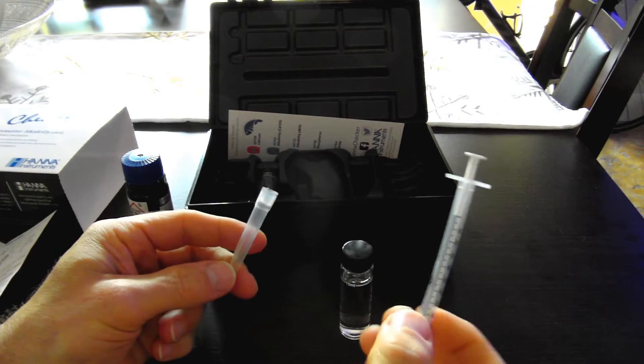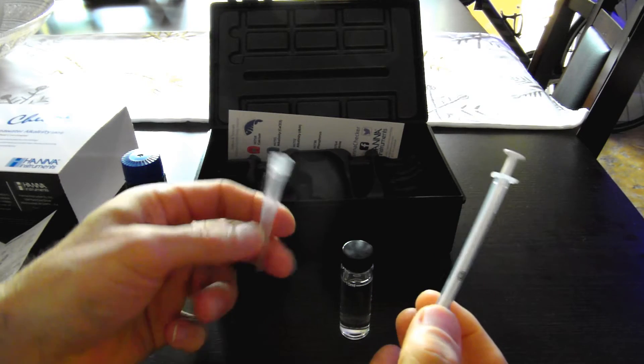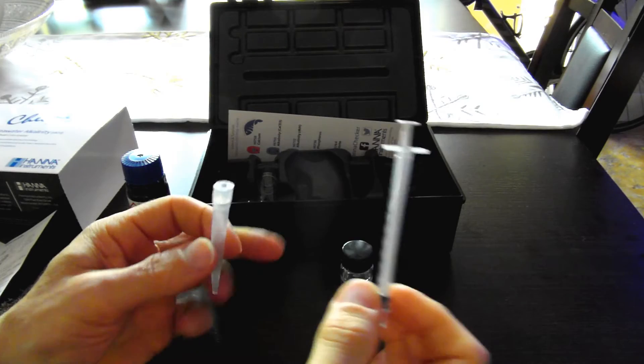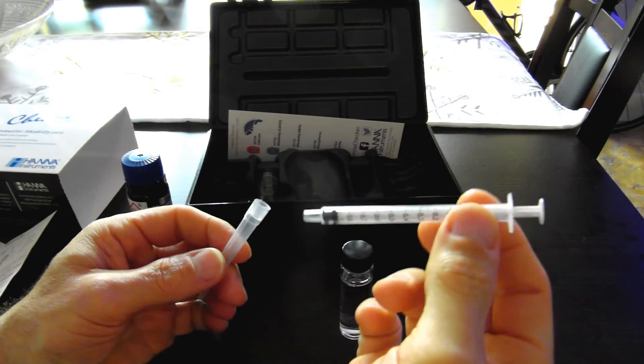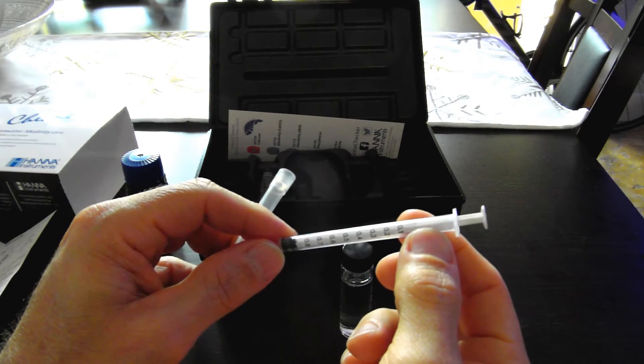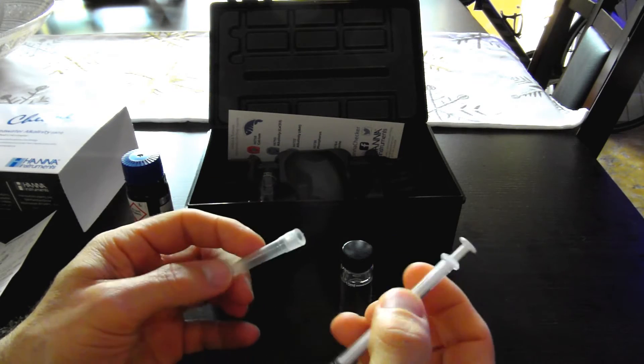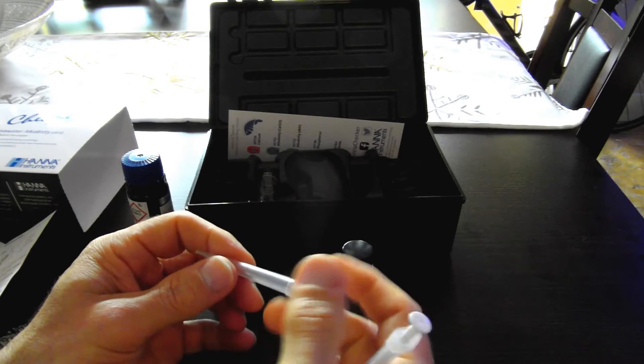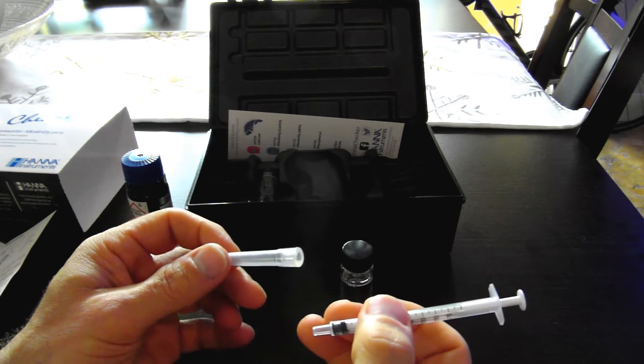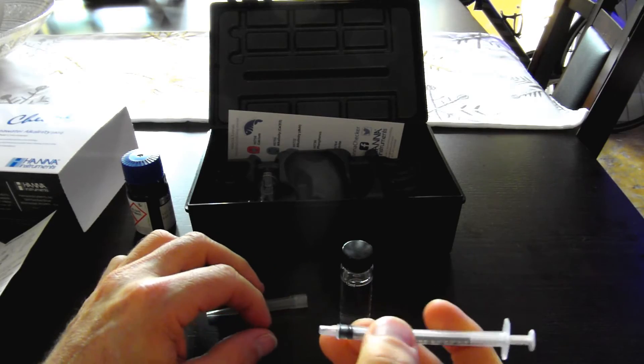All right, with this Hanna Checker you get a 1 milliliter syringe and also the tip. Doing my research online, it looks like some folks prefer to use the syringe without the tip and bring the reagent up all the way to the 1 milliliter level. The jury's out. Some folks use the tip, some don't. Some don't like the extra space or air introduced when the tip is used. I'm going to go without using the tip.